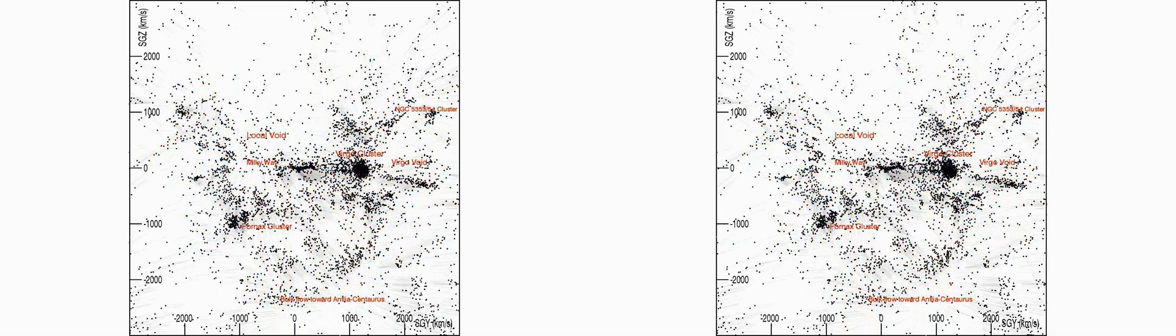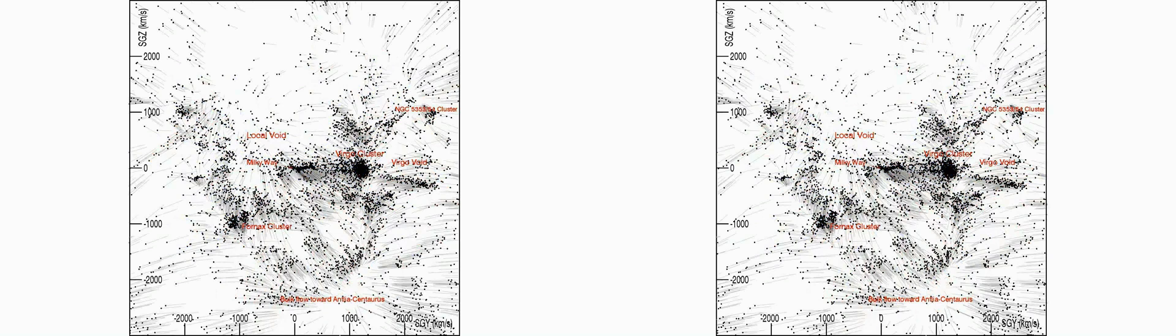The processing by the Wiener filter reveals the pattern of flows. The Centaurus region is to the background of the slab that we are viewing.